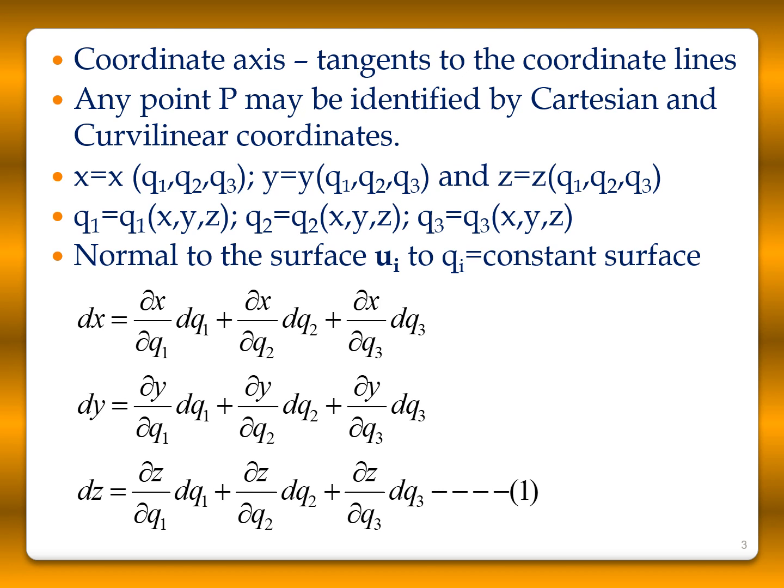The normal to each surface is taken as a basis vector. When q1 is constant, the basis vector is u1; when q2 is constant, it is u2; and when q3 is constant, it is u3. Since x is a function of q1, q2, q3, we can write dx = (∂x/∂q1)dq1 + (∂x/∂q2)dq2 + (∂x/∂q3)dq3. Similarly, we can write dy and dz.